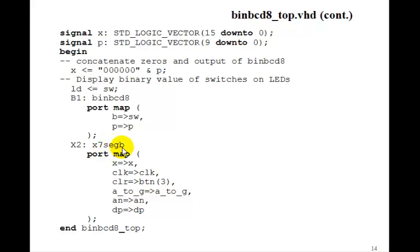Then in the X7 seg, X, which contains that P, just goes to X. Clock, these should be M clocks really, goes to M clock. Clear goes to button 3, A to G, AN. So that would be a top-level design. You could check that out and see how it works.